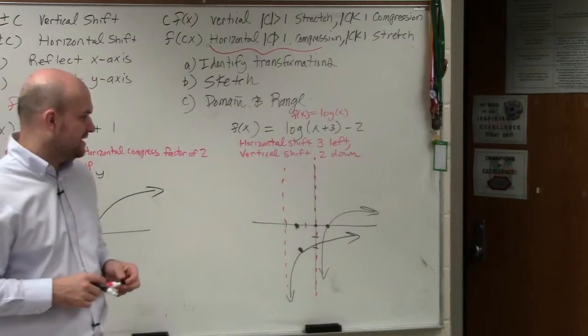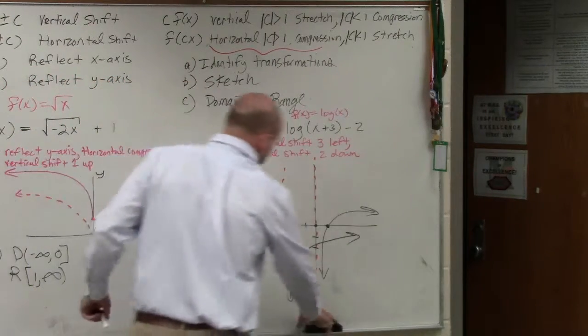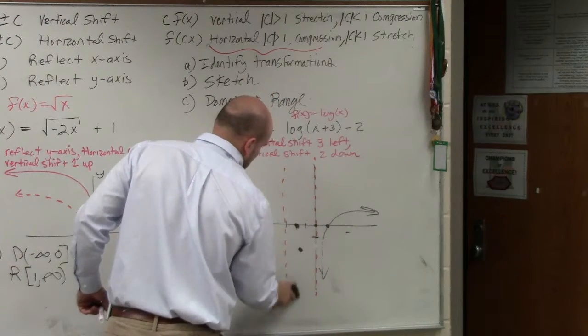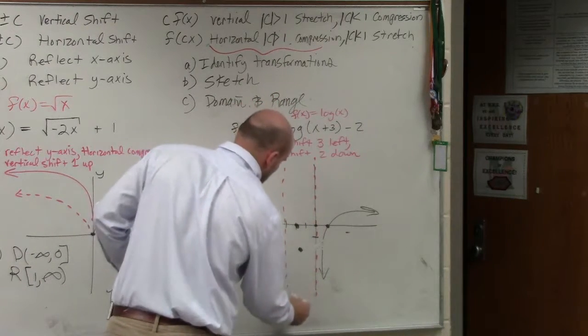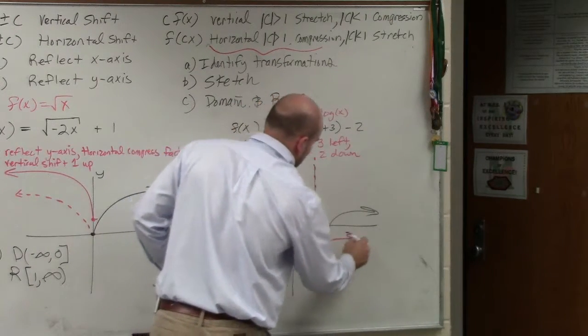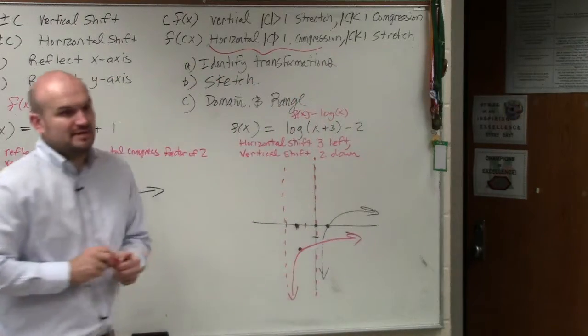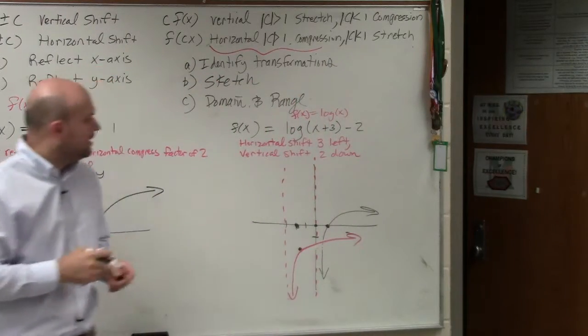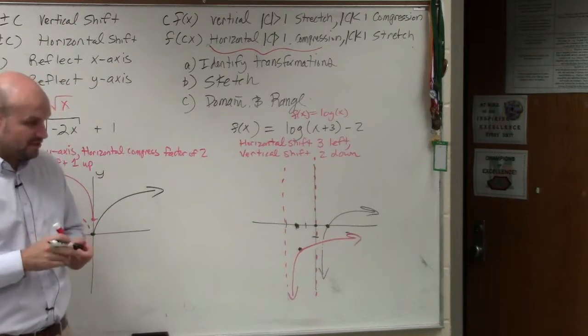So my graph should look something like that. Actually, let me do it in red. So the graph should look something like that. Now, let's do the last one, the domain and range.